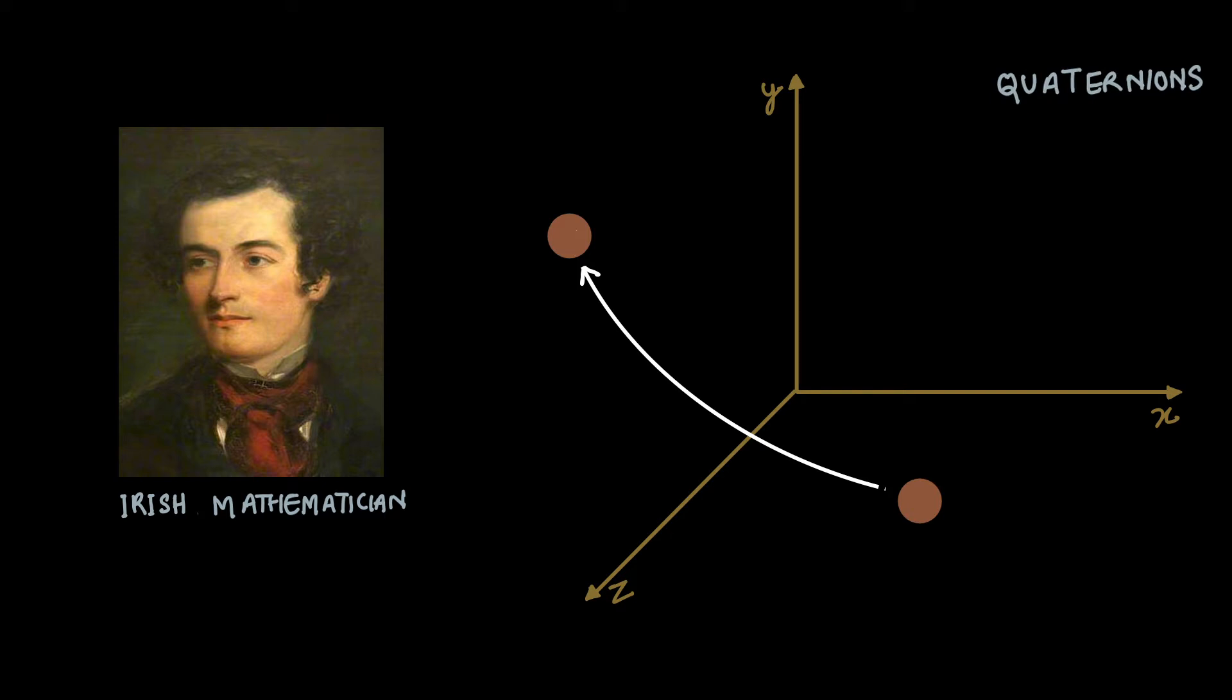William Hamilton, an Irish mathematician, was looking for a three-dimensional analog to this, to be able to represent rotation by multiplication. Like how to rotate a point in three-dimensional space with the help of multiplication only. After a long search, he discovered quaternions, numbers of this form.